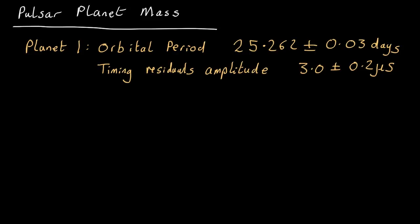Okay, let's use what we've just worked out to work out how heavy the planet is around this pulsar. First, some data. We can measure the orbital period, how long the pulsar takes to wobble backwards and forwards, which is the same time as it takes the planet to wobble back and forwards. This is for one of the planets. This pulsar actually has three planets, but just take one of them. Here's 25.262 days plus or minus 0.03.